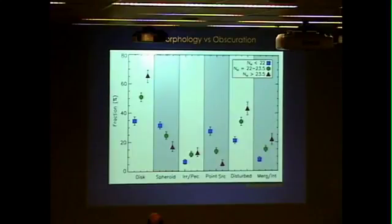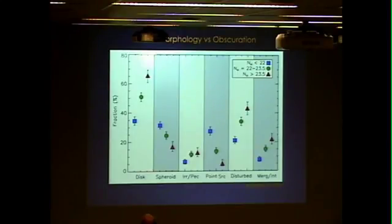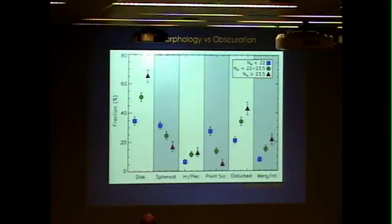Summarizing the host morphologies versus obscuration: unobscured sources are blue, moderately obscured are green, and Compton-thick are red. We see an increase in disk fraction, a decrease in spheroid fraction, a higher point-source fraction for unobscured sources, and an increasing disturbed fraction with obscuration. Even using a conservative definition — throwing out merely asymmetric morphologies — we still find a statistically significant ~2.7 sigma excess of interactions and mergers in Compton-thick sources relative to unobscured sources.